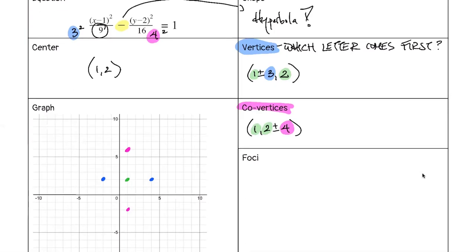Whichever term comes first in the hyperbola equation tells us where the vertex is. For the ellipse, it's the bigger number that gives the vertex, but for the hyperbola it's the one that comes first — different shape, different rules.